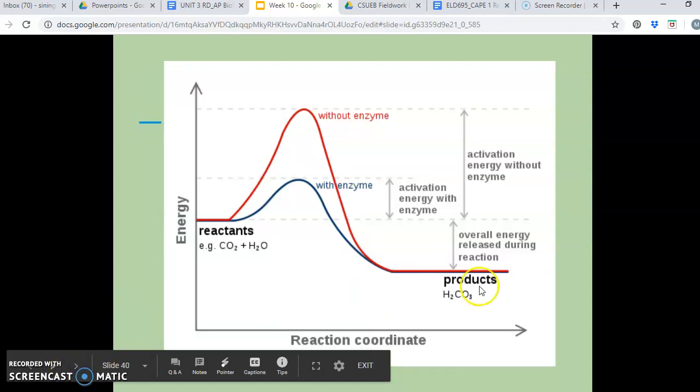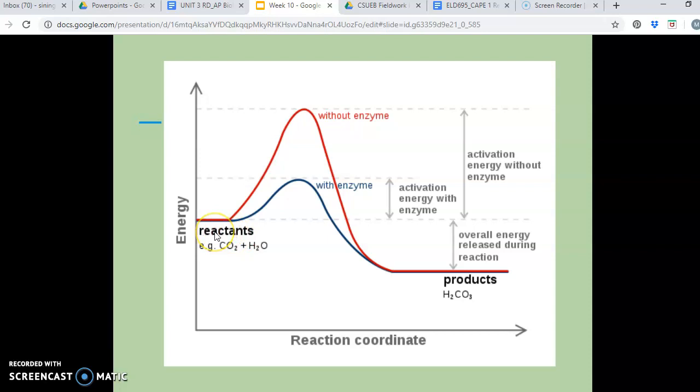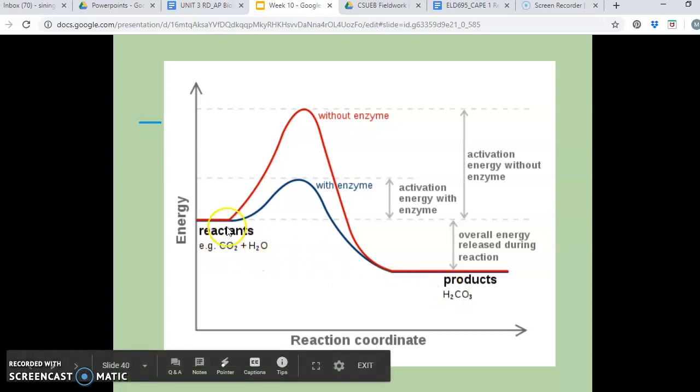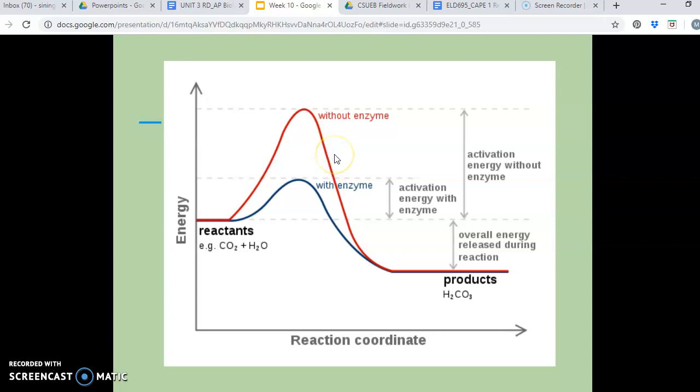So then here's a graph explaining that the energy over the reaction or the reaction coordinate. And you can just see that the time it takes to convert the carbon dioxide and water into bicarbonate without the enzyme, you have a really high amount of activation energy, but with the enzyme, it's much lower.